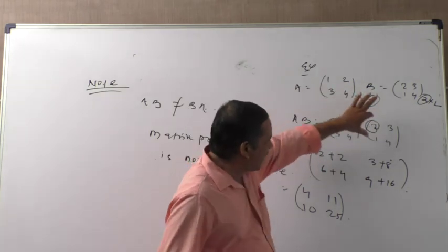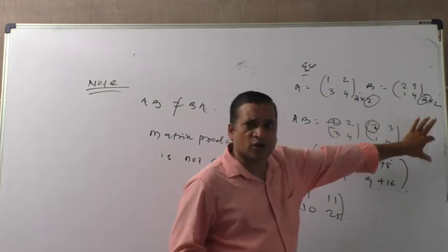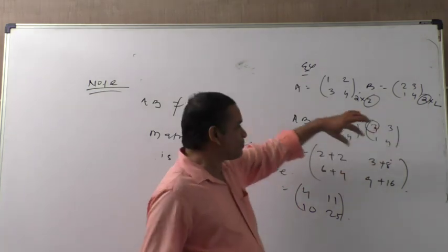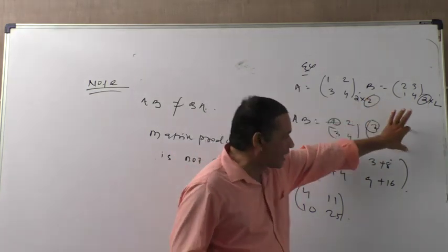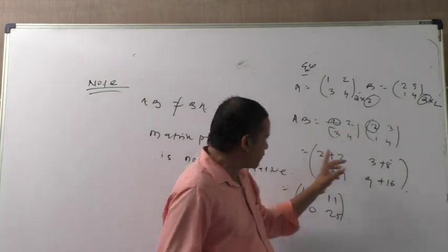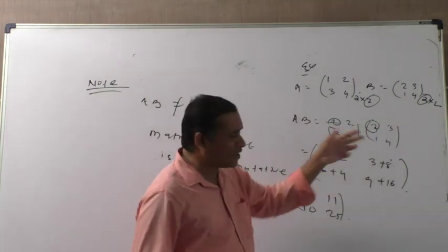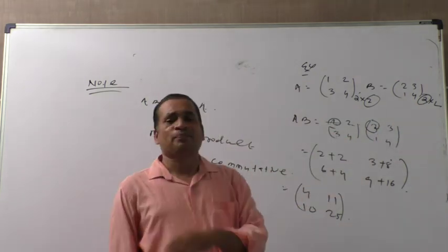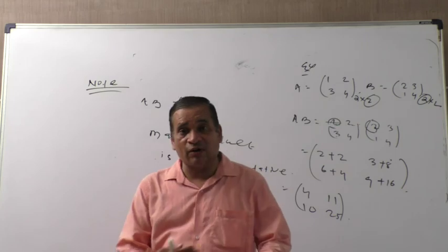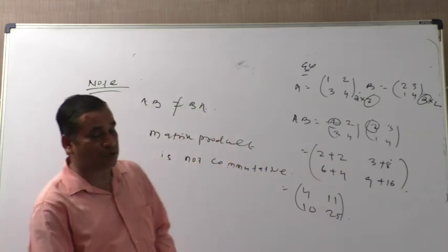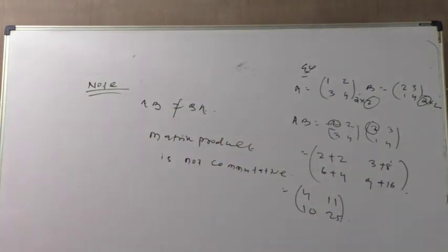Once again: all the rows are multiplied with all the columns — first row with first column, second column, third column, fourth column, and so on. Second row with first column, second column, third column. The corresponding elements will be added. In the next lesson, I will give you the types of matrices.